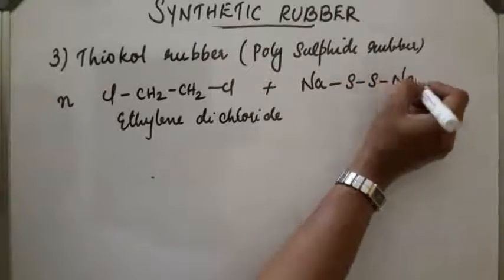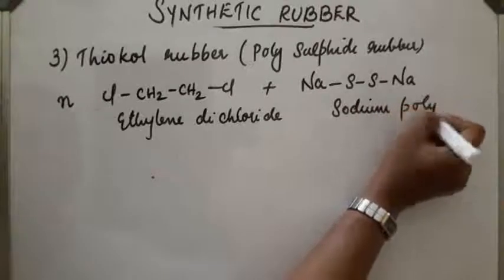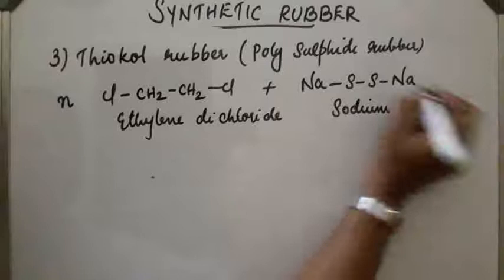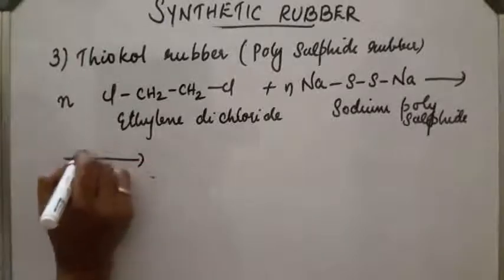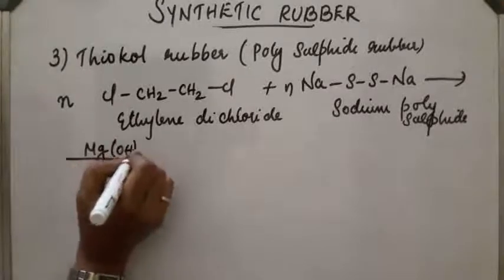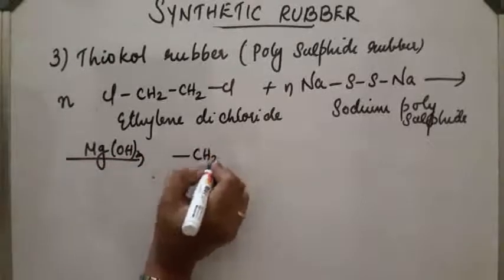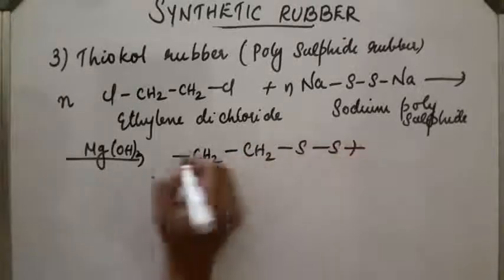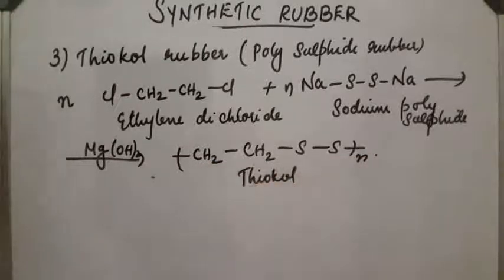Polymerizes in presence of magnesium hydroxide, reaction takes place. The compound obtained will be (-CH2-CH2-S-S-)n. This is thiocol, thiocol rubber.